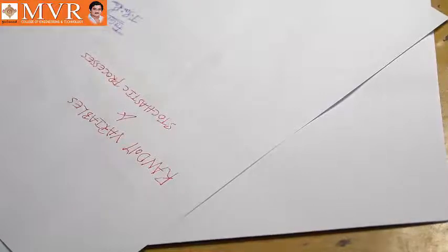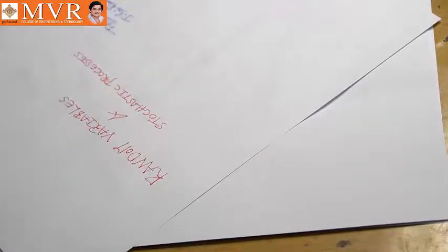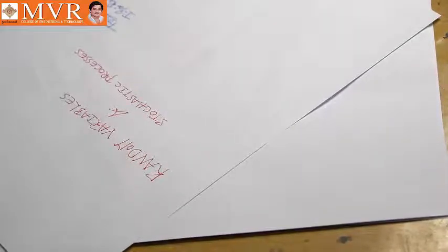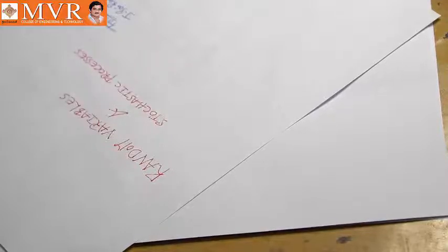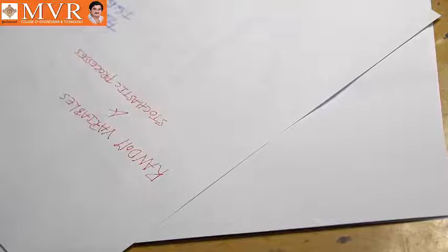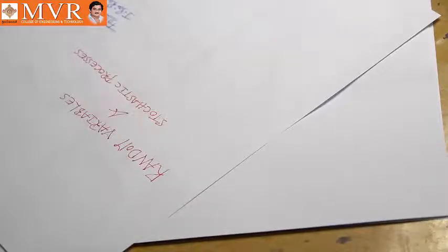Before we move on to the probability concept, in the next class I will tell you the syllabus for this Random Variables and Stochastic Process subject. Here you can see one random variable and two random variables — that will be the multiple random variables — along with their characteristics and properties. You can see all of those things in this subject. If you have any doubts, you can ask me in the comment section.